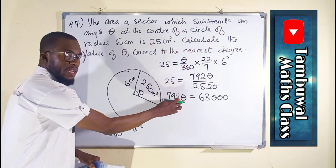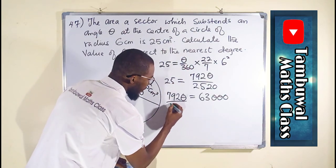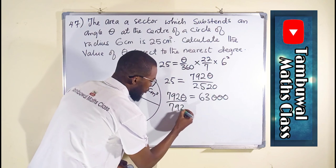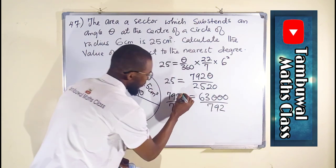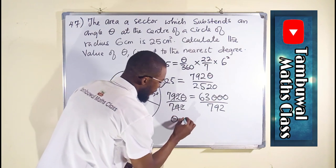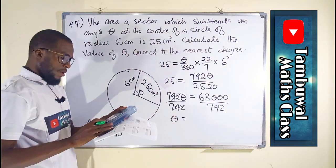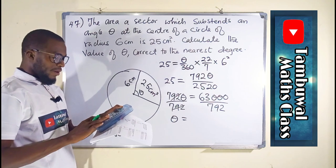We are looking for theta, remember, so we can divide both sides by 792. This will cancel this leaving only theta equals divide by 792.